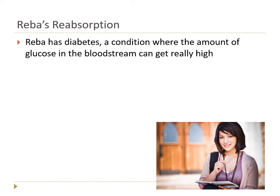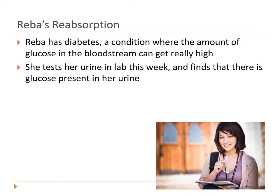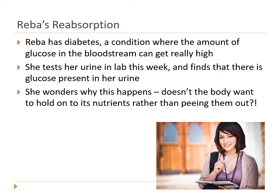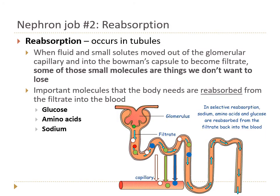We're going to use Reba as our case. She happens to have diabetes — a condition where the amount of glucose in your bloodstream gets abnormally high. There are two different types: type 1 and type 2, and the reason for high blood glucose differs slightly between them. But in all cases of diabetes mellitus, you have too high a blood sugar. She tests her urine in lab and finds glucose in her urine — and she says, wait a minute, glucose is not a waste product, it's a nutrient. Why isn't my body holding on to this? Why am I peeing it out? Well, it has to do with reabsorption.